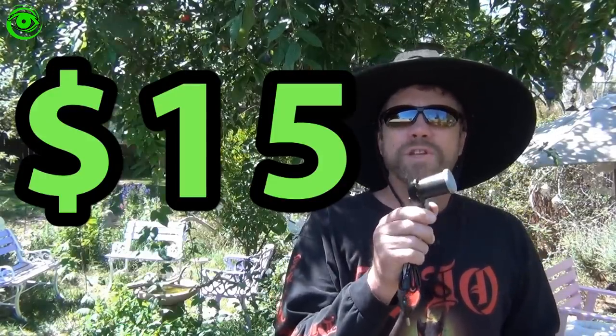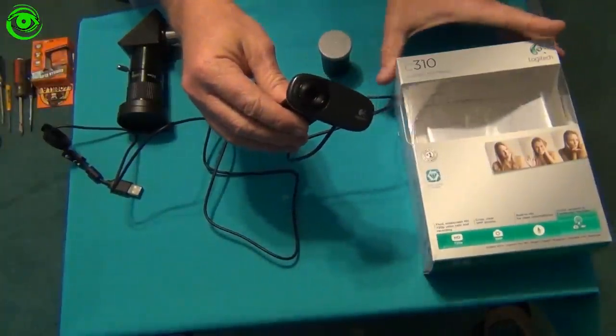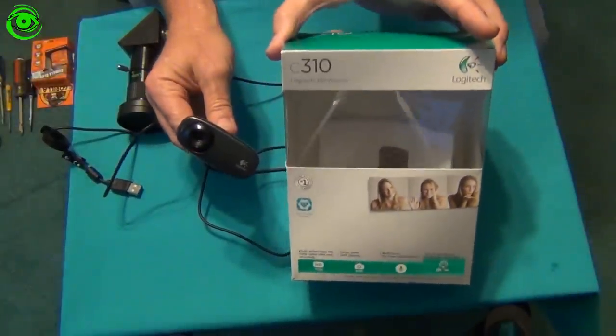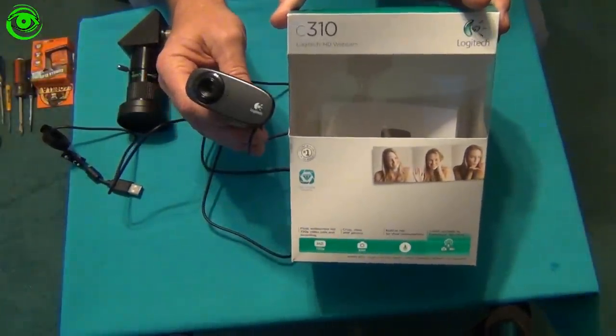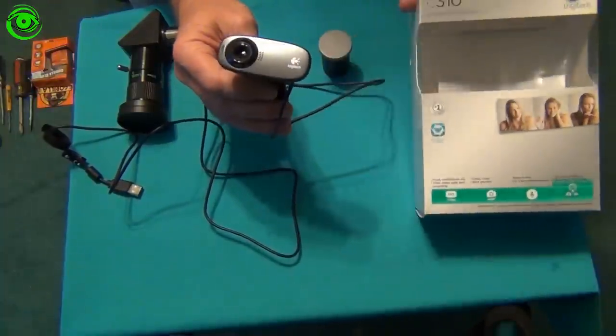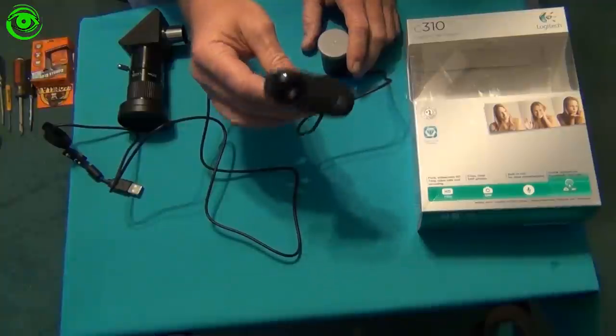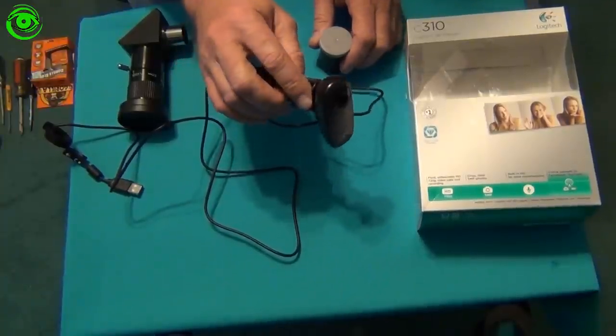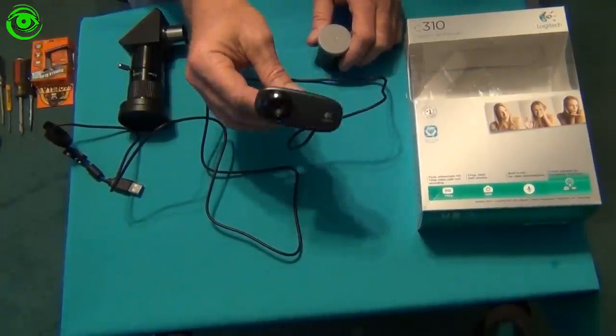Webcam, which is a Logitech C310. I picked this camera up for about, well, it was $15 on Craigslist. And I'm going to modify it so that we can use it as a planetary imaging camera.